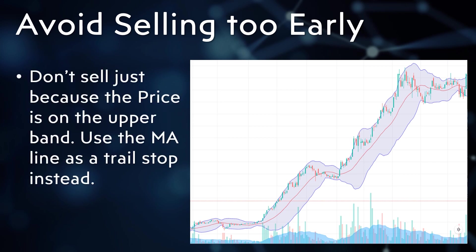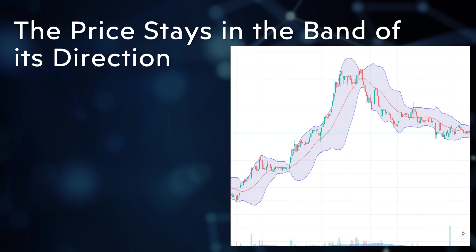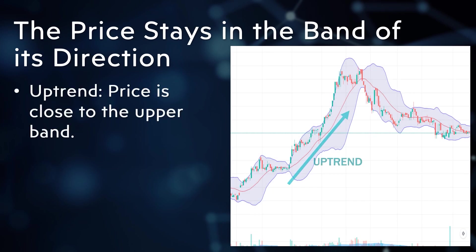Avoid selling too early just because the price is at the upper band. Instead, follow the trend. Use the MA as a trailing stop to attain better trading returns. Sell or lock profits when the price closes below the MA line. In an uptrend, the price tends to stay within the upper band.